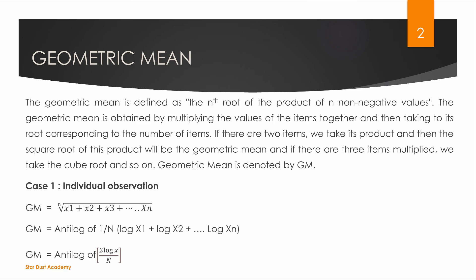The equation is: if we add all the log x values divided by n, then take the antilog of that result, we get the geometric mean. This is the geometric mean formula using logarithms.